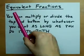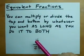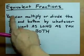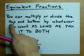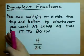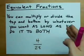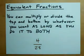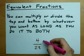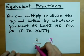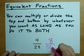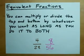Hey guys, little lesson on equivalent fractions, which are fractions that are written differently but mean the exact same thing. You can multiply or divide the top and bottom of a fraction by whatever you want, as long as you do it to both the top and the bottom. What's your favorite number? I did 2 — we can multiply the top by 2 and the bottom by 2 to get a fraction that's equivalent to this one.